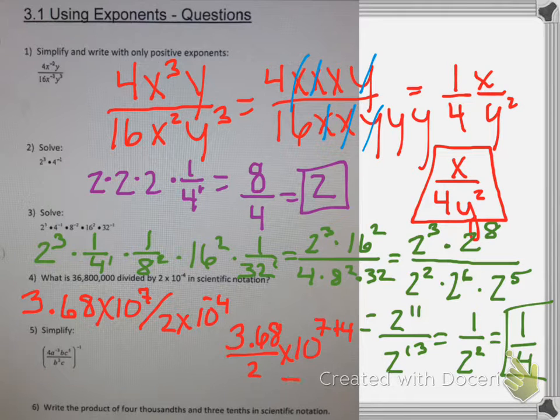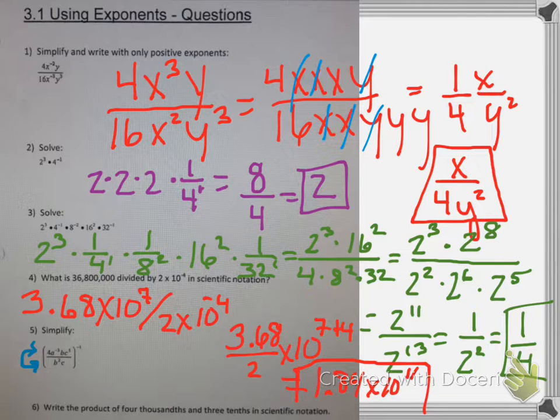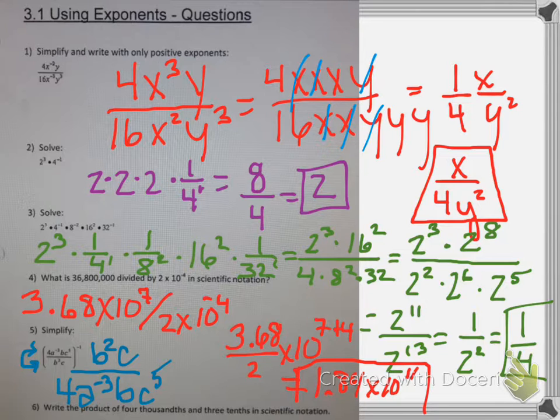The last problem is similar to the ones up top, except I have a giant negative exponent. So the first thing I'll do is flip that whole fraction and put b squared times c at the top and 4a to the minus 2 to the minus 3rd times bc to the 5th at the bottom. Now the only other one I have to flip is move that a up to the top and then cancel out what I have similar in numerator and denominator.